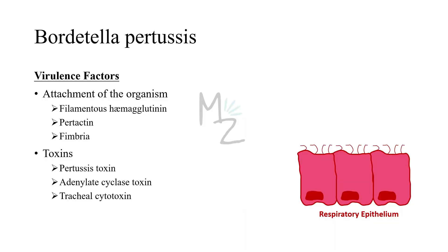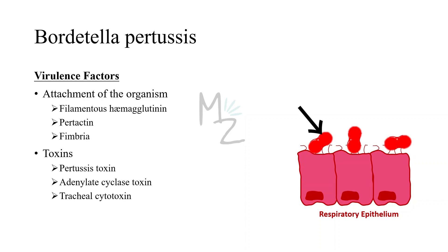Bordetella Pertussis has various virulence factors. Attachment of Bordetella Pertussis to the respiratory epithelium is done by filamentous hemagglutinin, pertactin, and fimbriae. Bordetella Pertussis also releases certain toxins like pertussis toxin, adenylate cyclase toxin, and tracheal cytotoxin. We'll talk about these toxins later in today's video.